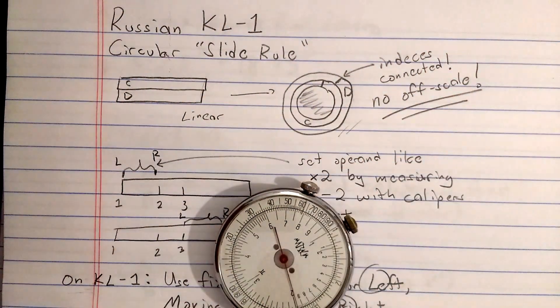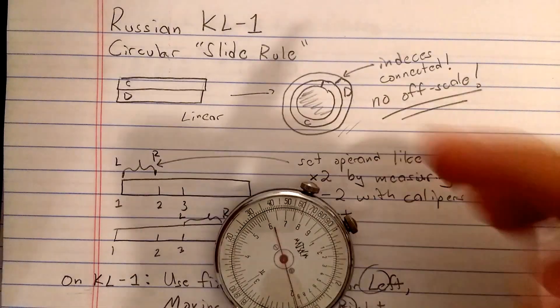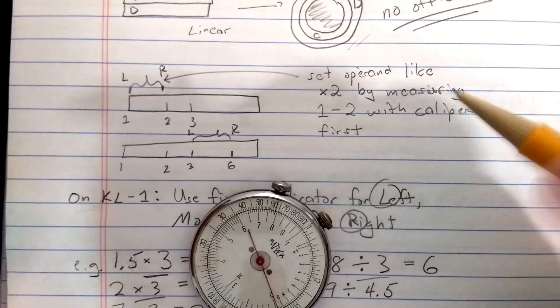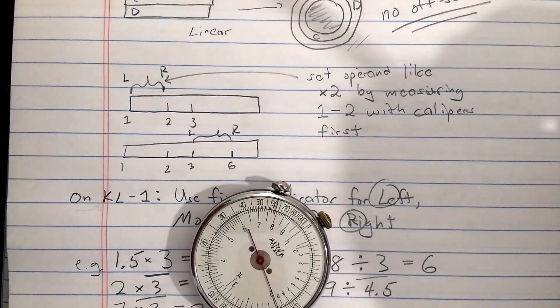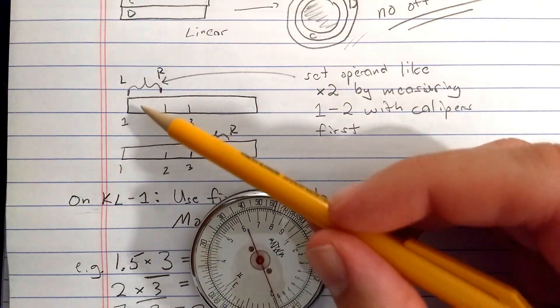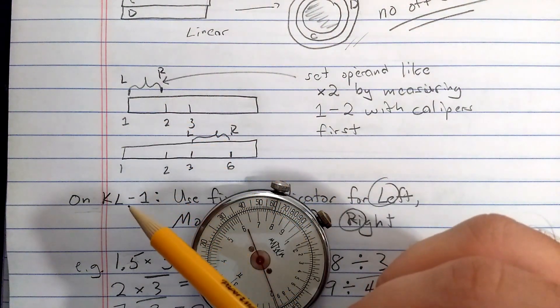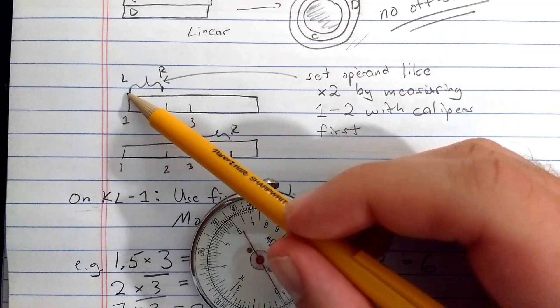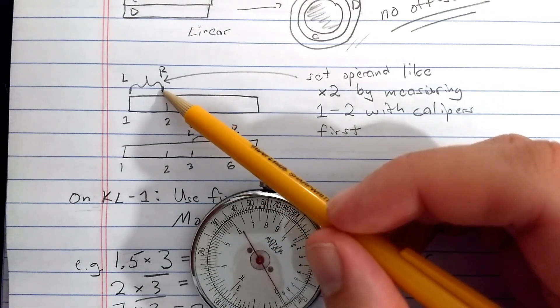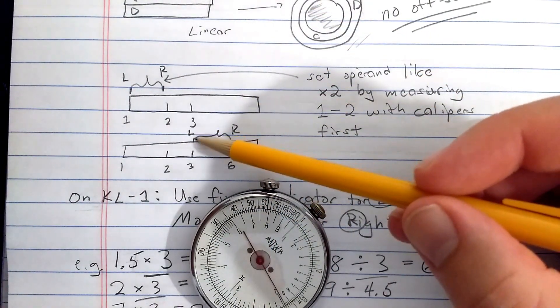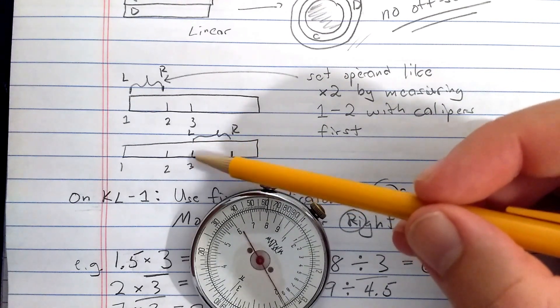That's great, no off-scale. I don't have a real circular slide roll to show you. But a precursor of the slide roll is a logarithmic scale with a set of calipers where you say you want to multiply something by 2. You set the calipers to measure the distance from 1 to 2. Of course, that's log of 2.